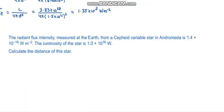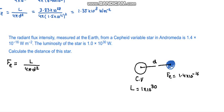Let's see another question. It says that the radiant flux intensity measured at the earth from a Cepheid variable star in Andromeda is 1.4×10⁻¹⁶. The luminosity of the star is 1×10³⁰ watts. Calculate the distance of the star. In this question you are given all the values; you just have to find the distance. We just need to rearrange for d and solve it after plugging in all the essential values.